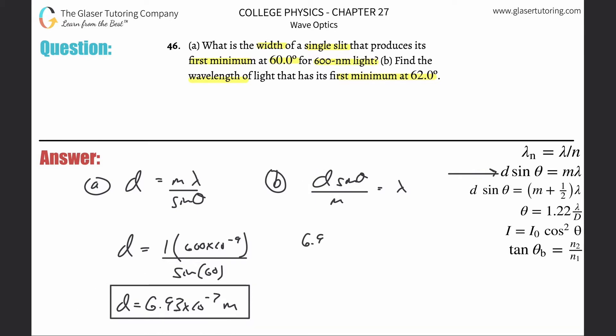So what's the opening of the slit? Well it hasn't changed, so it's going to be the one that we just calculated: 6.93 times 10 to the minus 7th times the sine of the new angle they gave you, 62 degrees, then all divided by - oh no excuse me - it has its first minimum, so m is 1.